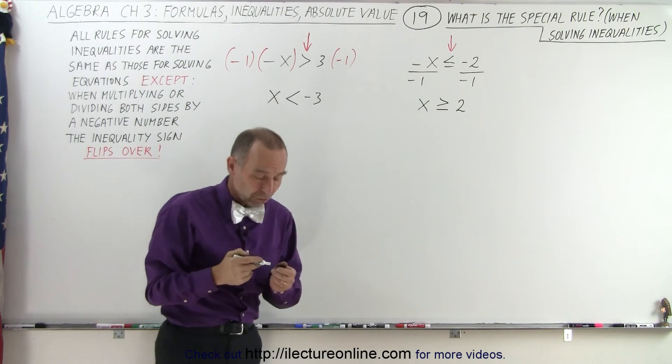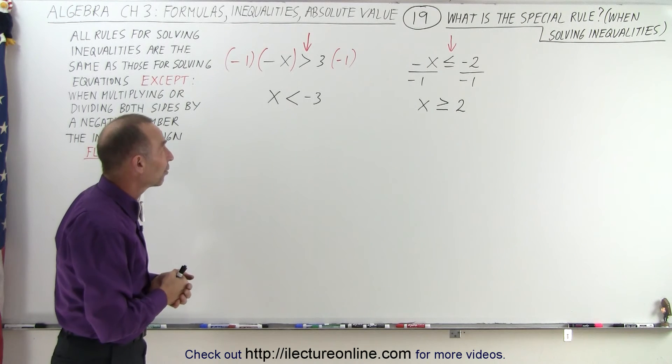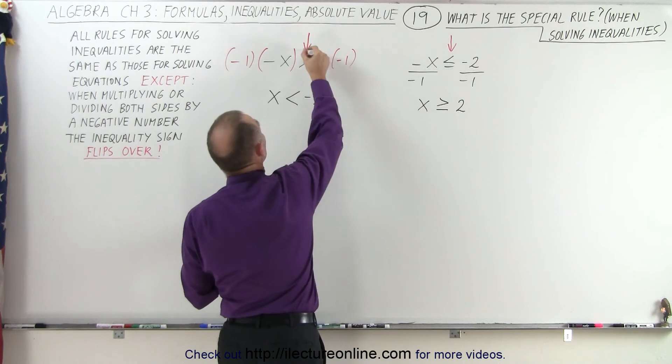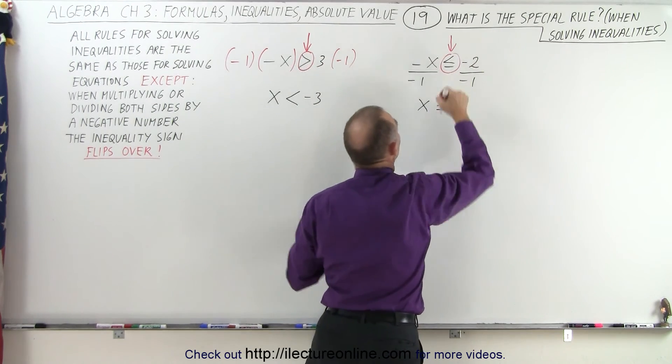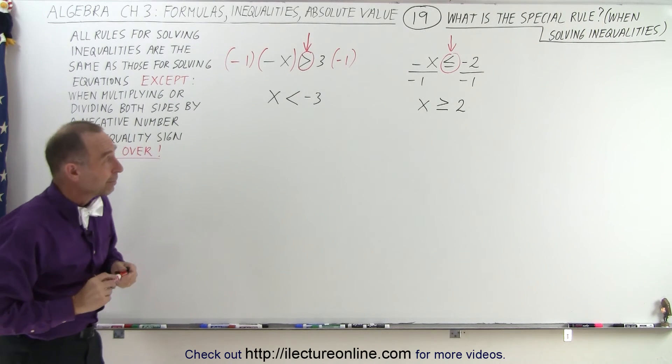So that's what we need to do when we multiply or divide the inequality signs by a negative number. It causes the sign, the inequality sign, to flip over, and we have to write it like that then, after we multiply or divide by a negative number.